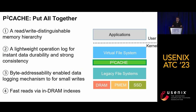When we put all this together, we get the final design of P2Cache. First, our solution exploits a new read-write distinguishable memory hierarchy. Second, our solution introduces a lightweight operation log for instant data durability and strong consistency. Third, our solution leverages PM byte-addressability to persist updates efficiently. Last, our solution achieves fast reads via in-DRAM indices and the DRAM-based page cache.